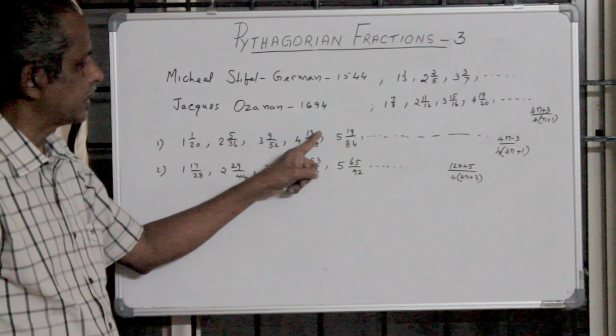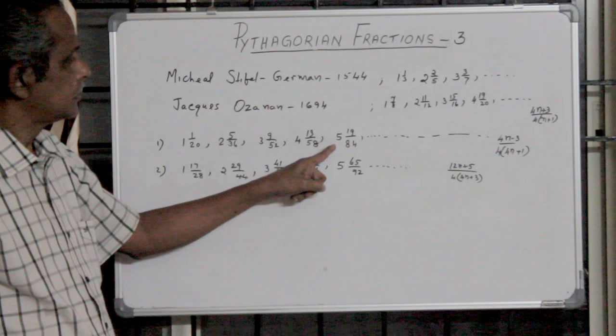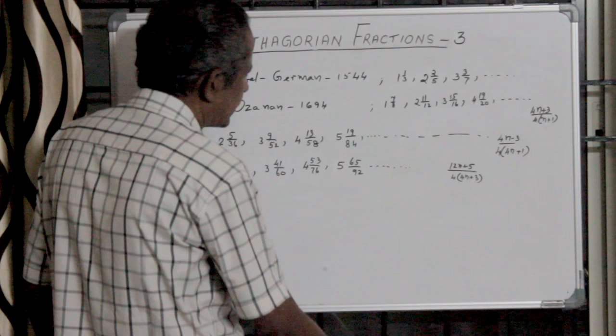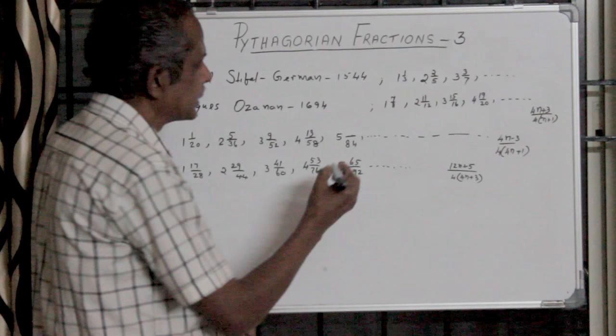There was some mistake. For 4n minus 3, when n equals 5, 4 into 5 is 20, 20 minus 3 equals 17.